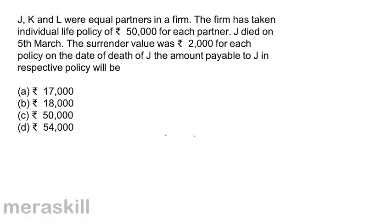The amount payable to J in the respective policy will be — let us look at the options. A: 17,000. B: 18,000. C: 50,000. D: 54,000.